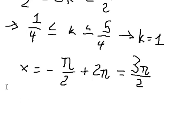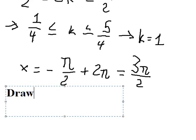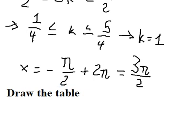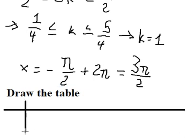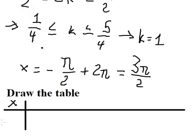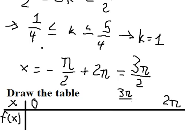Now we need to draw the sign table. So we have this table here, from 0 to 2π, and this one we have 3π over 2. And this one is about the solution of the function. So we have number 0 here.